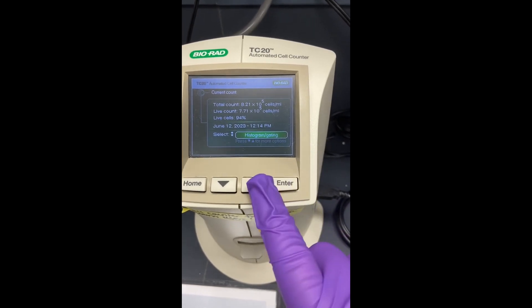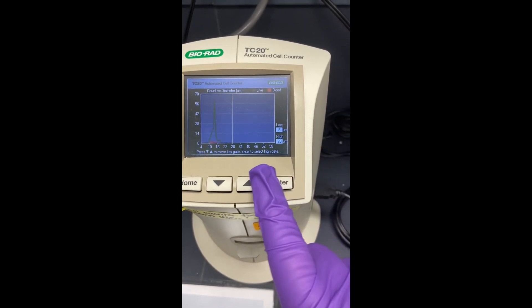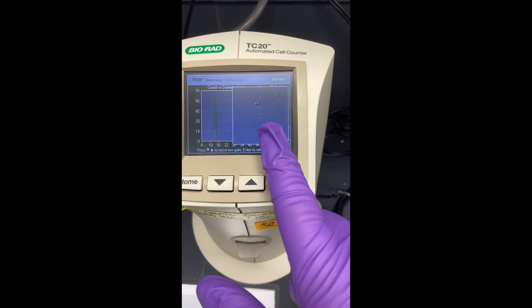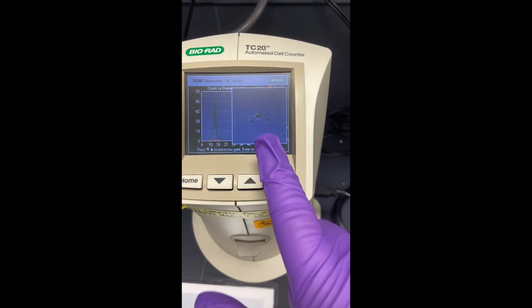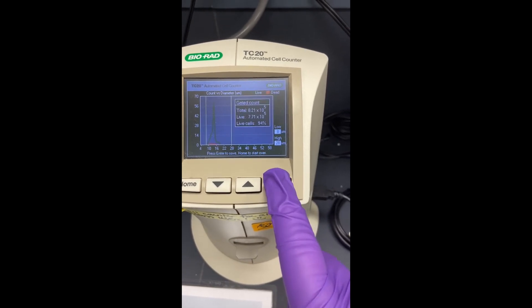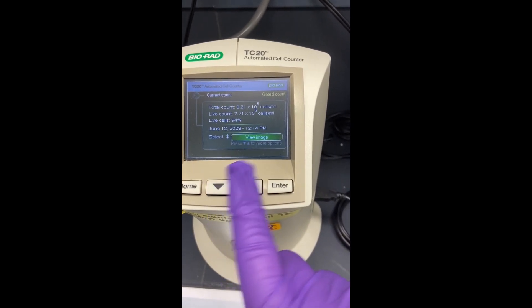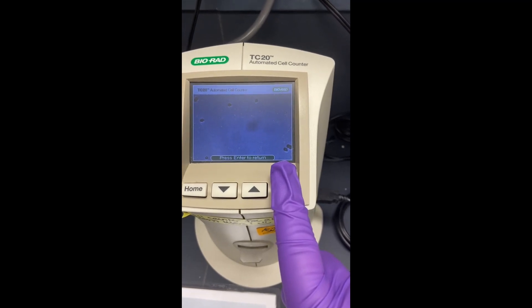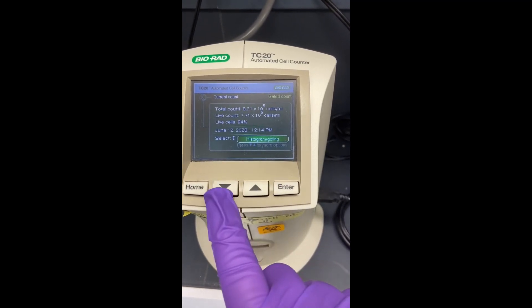So then you can go through your histogram gating and see how it counted. It'll actually show you examples. So if you have any questions about what it's actually doing, that's good. You can view various images around the slide.